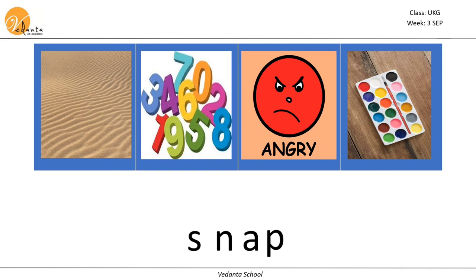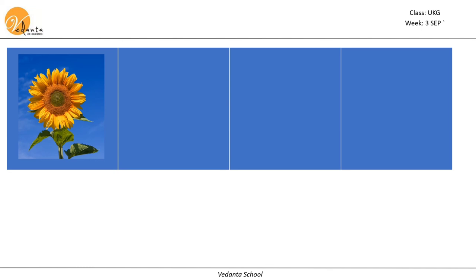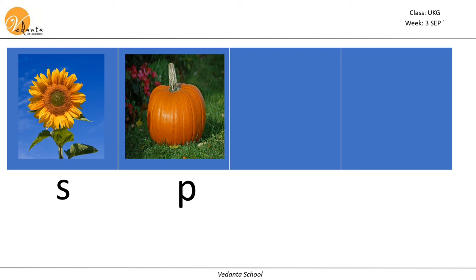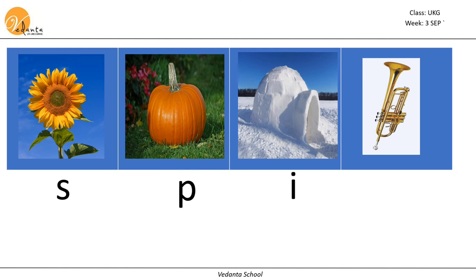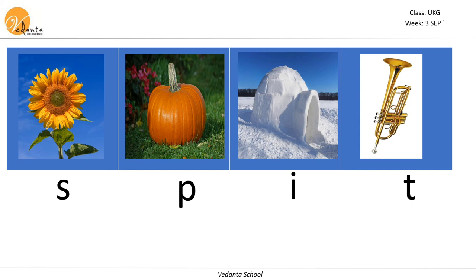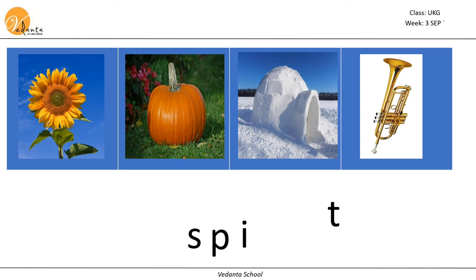The first picture is sunflower — starts with s sound. Pumpkin starts with p sound. Igloo starts with i sound. Trumpet starts with t sound. Now let's blend the first two sounds: s, p — sp. Then add i and t — spit. Spit.